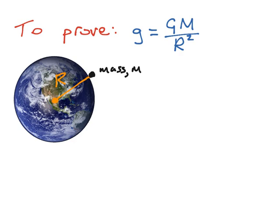In this derivation we're going to prove the formula for the acceleration of gravity, which is small g, is equal to the universal gravity constant, capital G, multiplied by the mass of the large object, which in this case is the earth, divided by the radius of the earth squared.